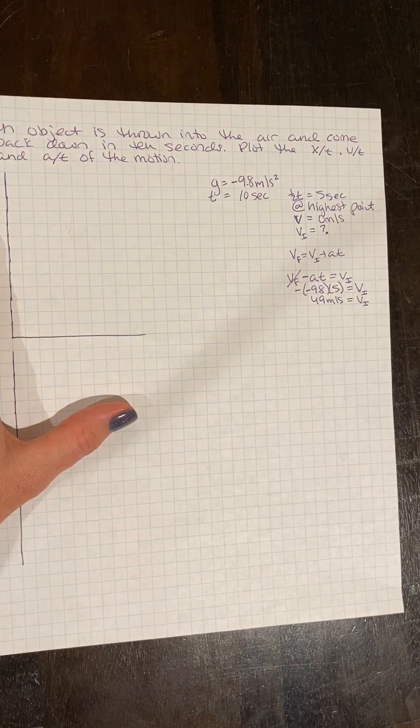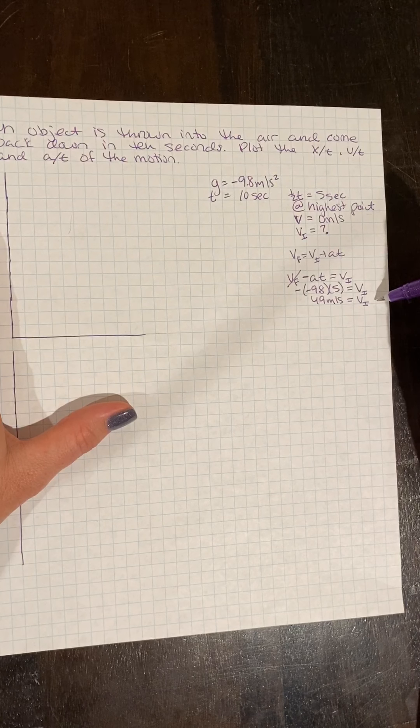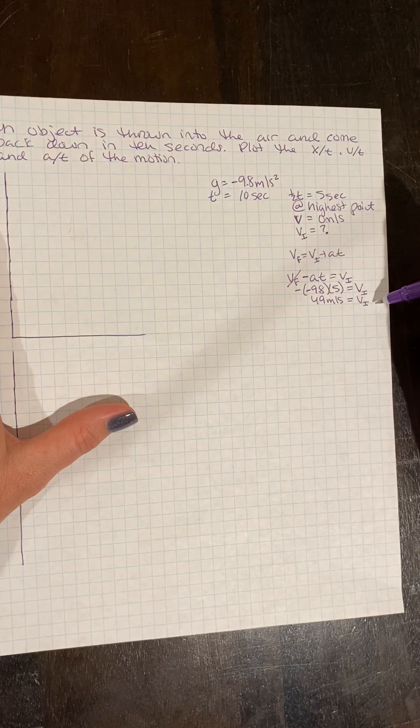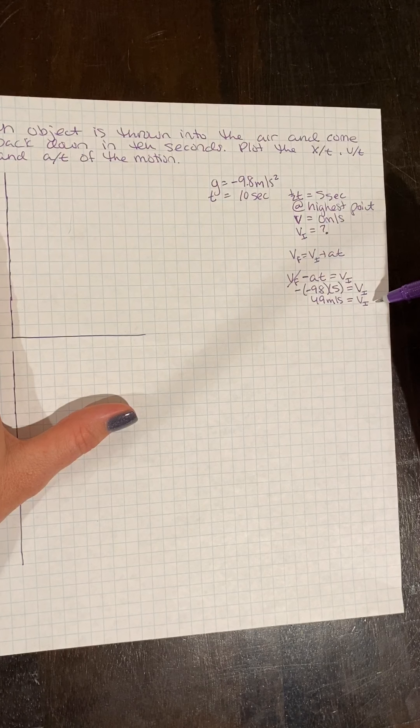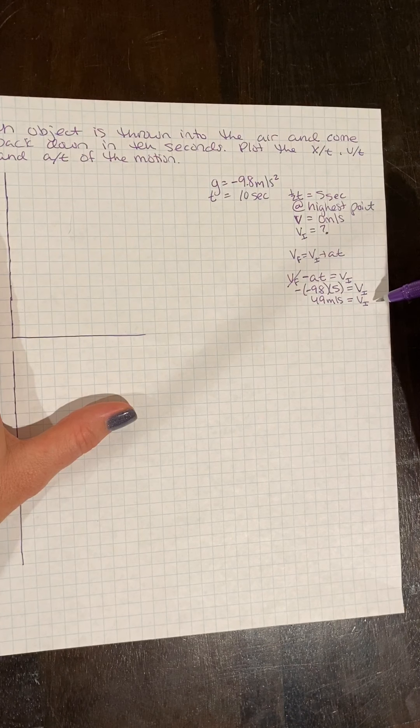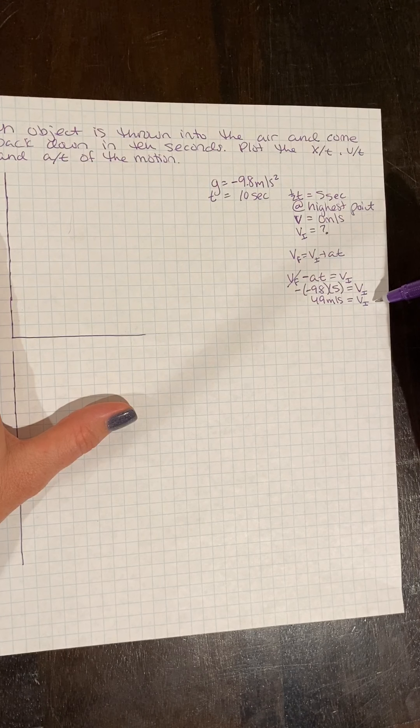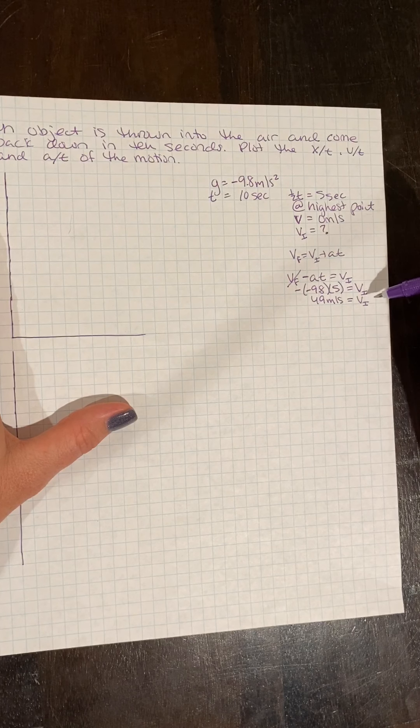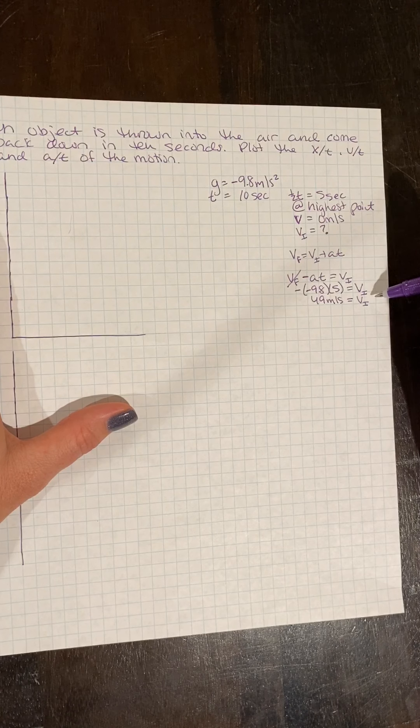Okay, so this is going to give us our max value for our velocity time graph. What about our height? We know our highest point is also halfway through the motion. So we can use another kinematic to solve for our highest point.